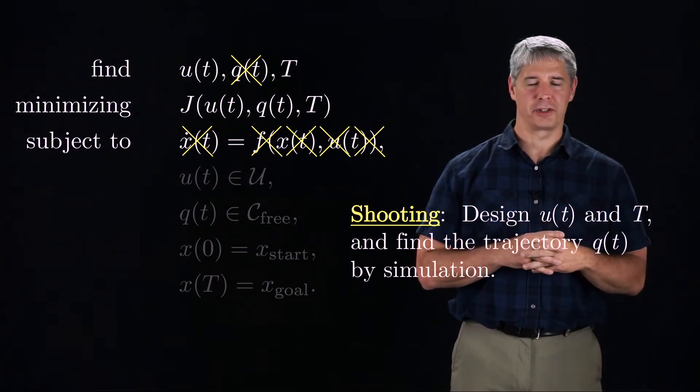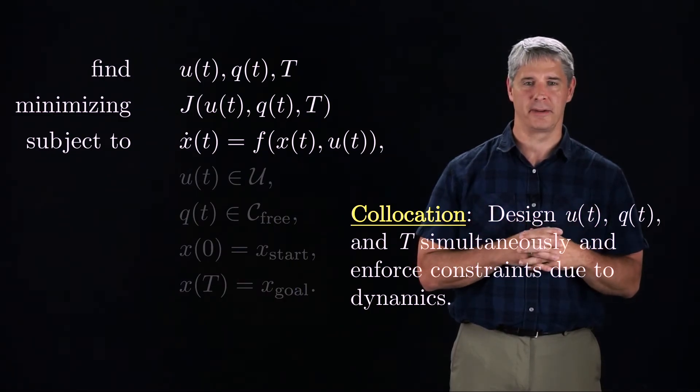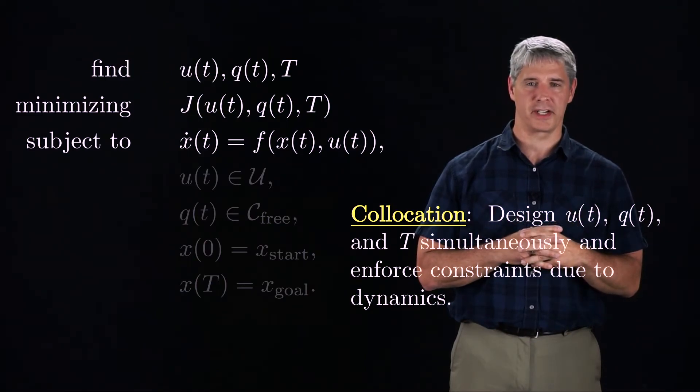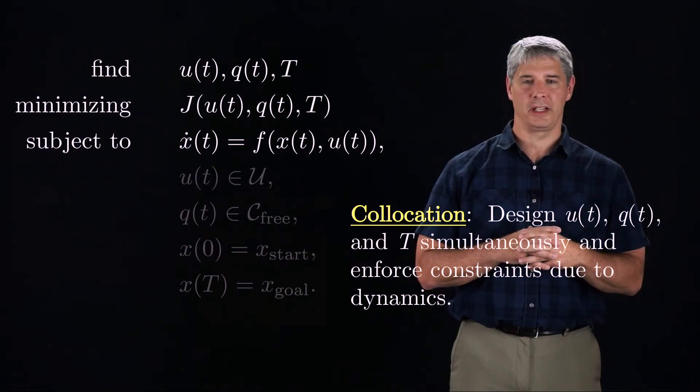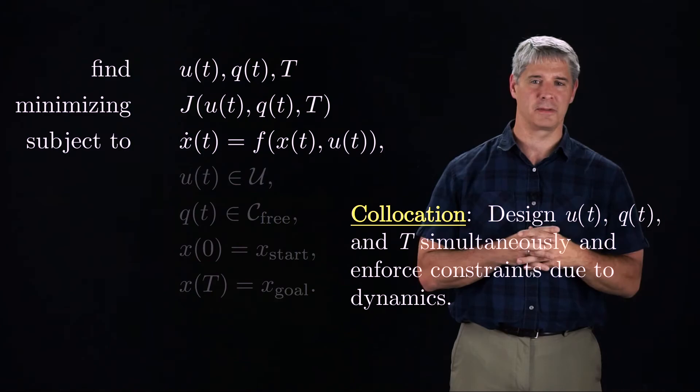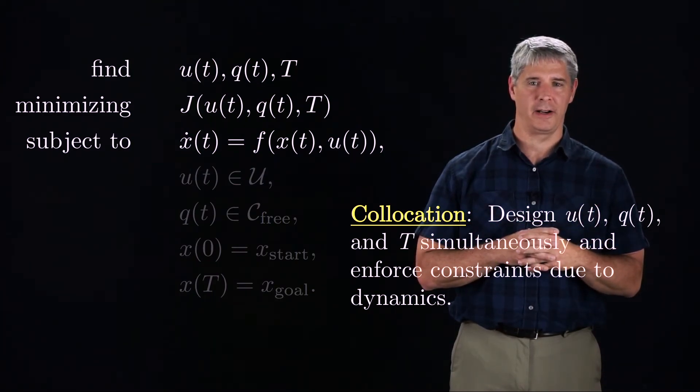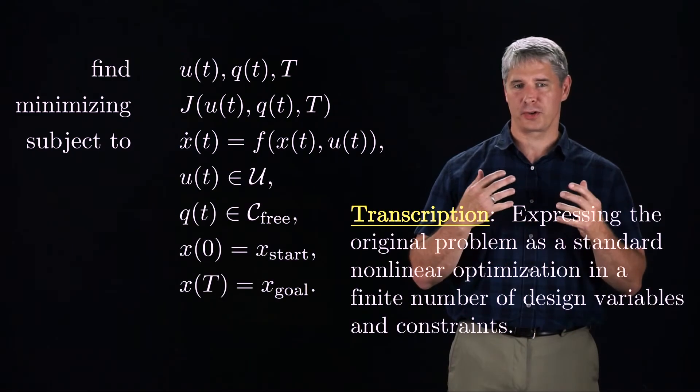Another popular approach is called collocation, in which you simultaneously design the control history and the trajectory. Since you design both, you have to enforce that the controls and trajectory are consistent according to the dynamics. This is commonly done by ensuring that the equations of motion are satisfied at a finite set of test points. The process of turning the problem statement into a standard finite parameter nonlinear optimization, which can be solved by techniques such as sequential quadratic programming, is called transcription.